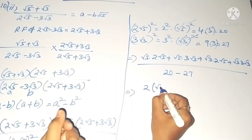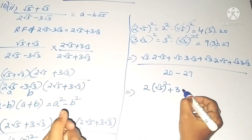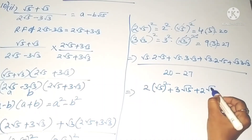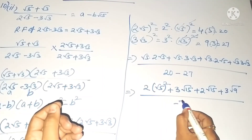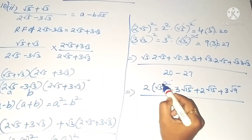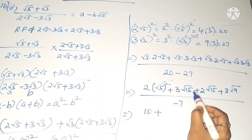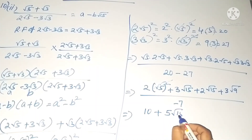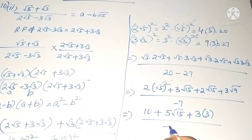For the numerator: √5 × 2√5 = 2 × 5 = 10, and √5 × 3√3 = 3√15. Then √3 × 2√5 = 2√15, and √3 × 3√3 = 3 × 3 = 9. So the numerator is 10 + 3√15 + 2√15 + 9 = 19 + 5√15.